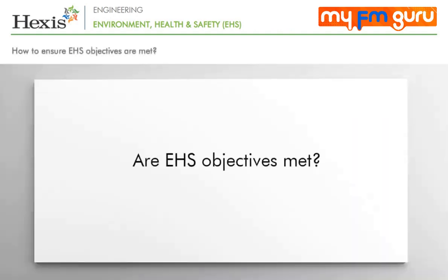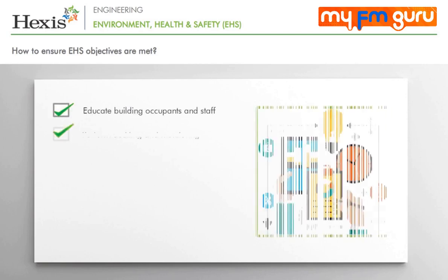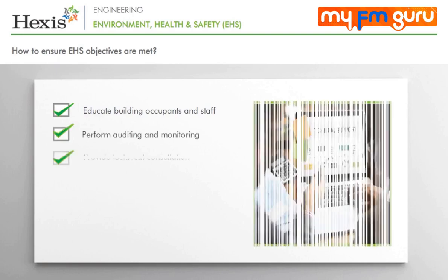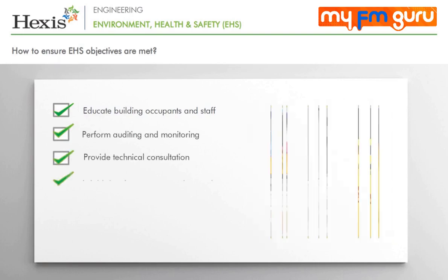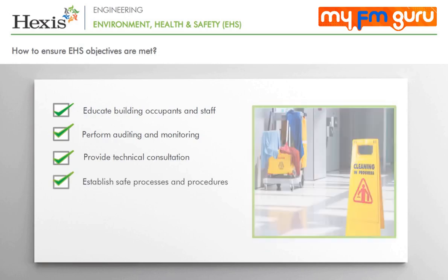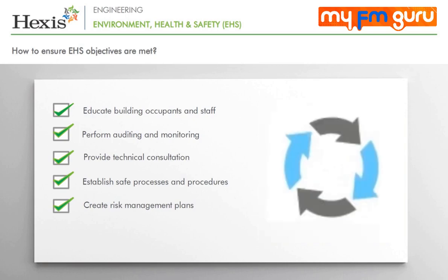How do organizations ensure that EHS objectives are achieved? The organization needs to educate building occupants and staff, perform regular auditing and monitoring, perform technical consultation, establish safe processes and procedures, create risk management plans, and so on, on an ongoing basis.